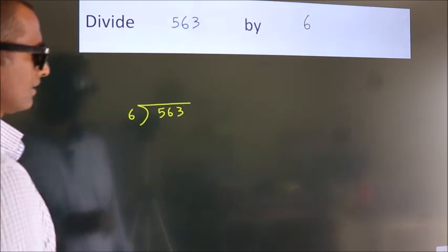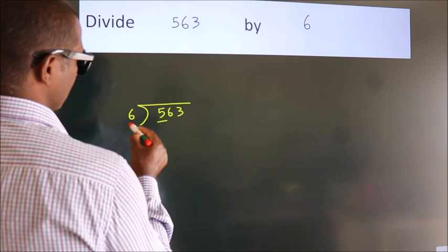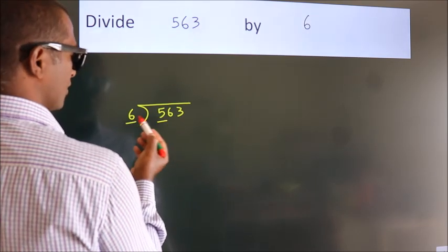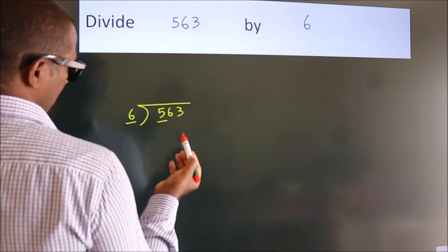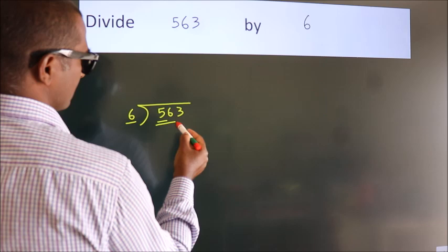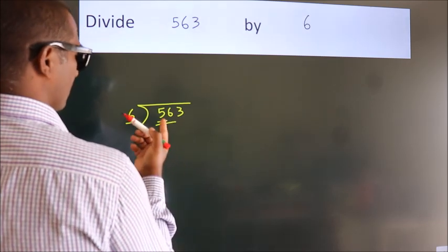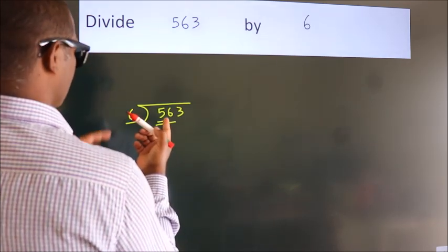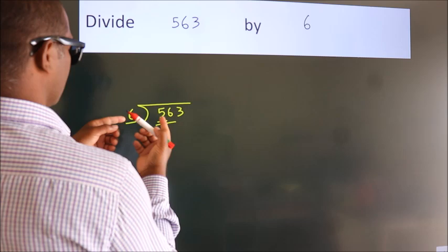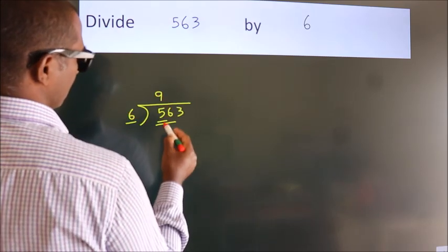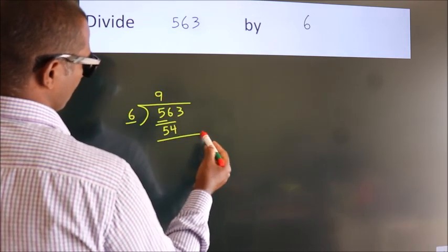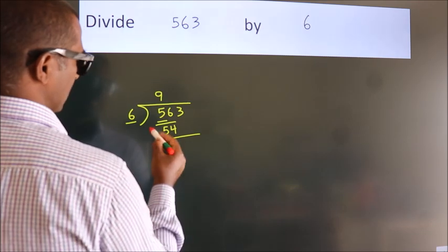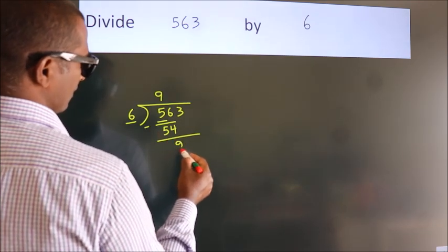Next, here we have 5, here 6. 5 is smaller than 6, so we should take two numbers: 56. A number close to 56 in the sixth table is 6 nines 54. Now we should subtract. We get 2.